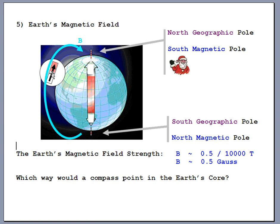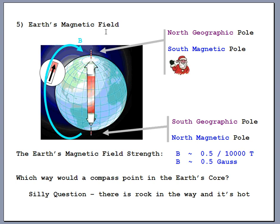Here's an interesting question: if you took a little compass to the core of the earth, which way would it point? Does the magnetic field continue to circle inside, or does it point up? I'm not going to answer that now — you can't go there anyway, there's rock in the way and it's extremely hot. But at the end of the lesson when we look at electromagnets, we'll come back to this. For now, the magnetic field lines do actually dive straight down.